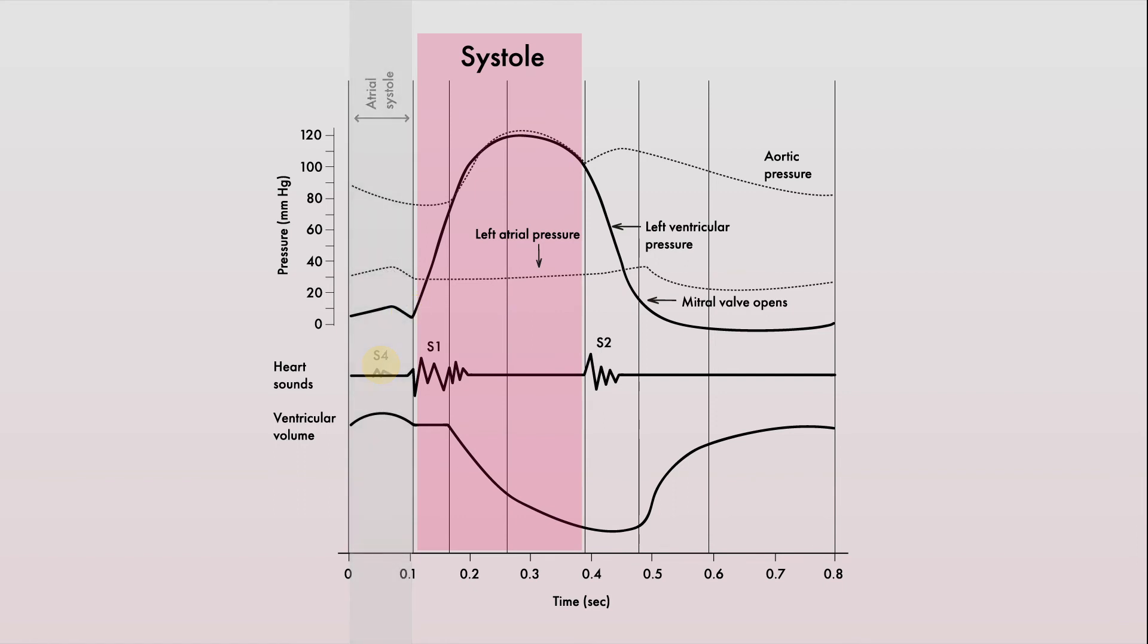So to summarize, systole is a period when semilunar valves open and the atrioventricular valves close and is when the ventricles contract and blood is ejected from the ventricles.